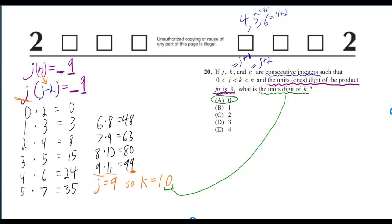And then that means that k is just going to be 10. Why? Because k is always j plus 1. So k is 10. But be real careful when you read the question. It says, what is the units digit of k? So because it asks for the units digit, I gotta go down here and only go for the 0. So that's our answer, 0.